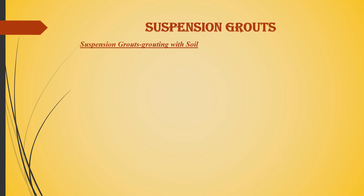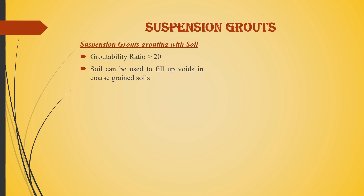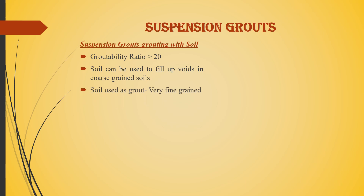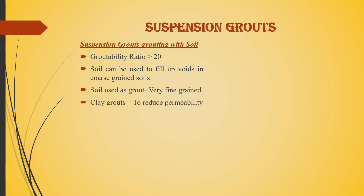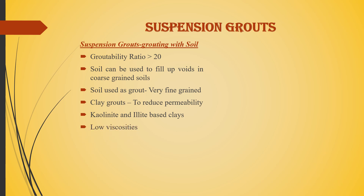For suspension grouts, grouting with soil requires a groutability ratio greater than 20. The soil can be used to fill voids in coarse-grained soils and must be very fine-grained. Clay grouts can also be used to reduce permeability; kaolinite and illite-based clays are commonly used. They possess low viscosities and are known as filler grouts.